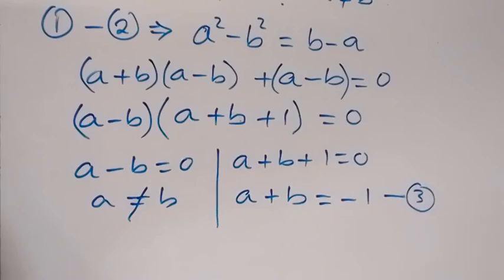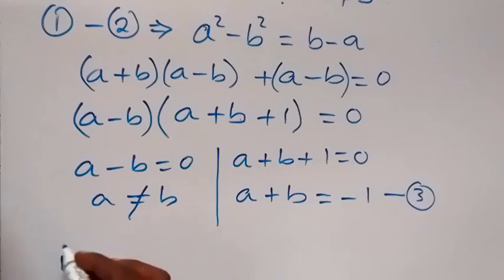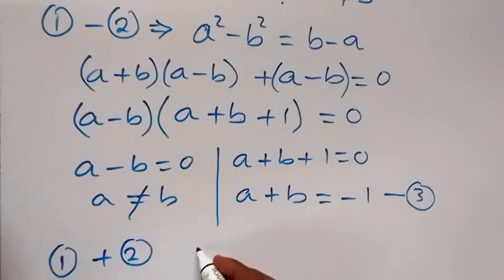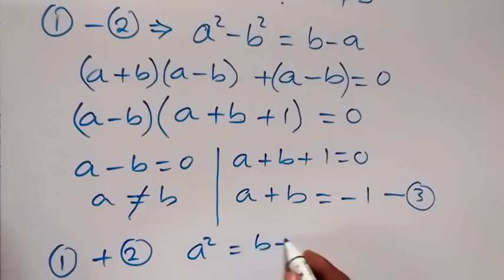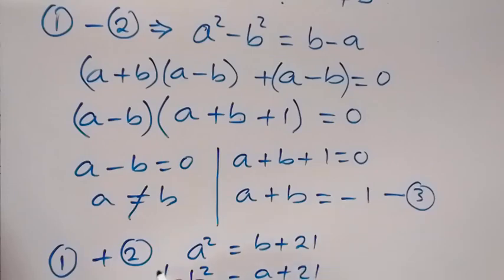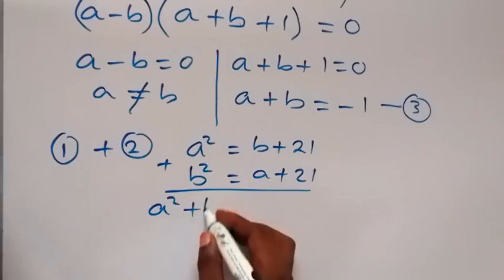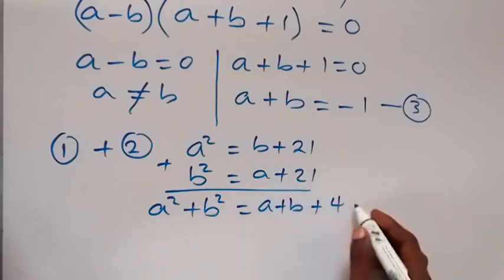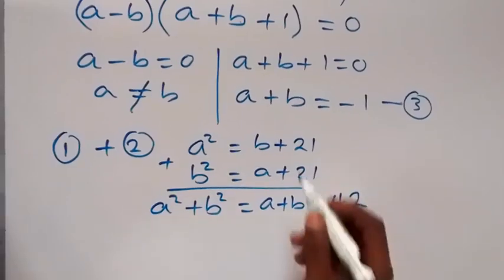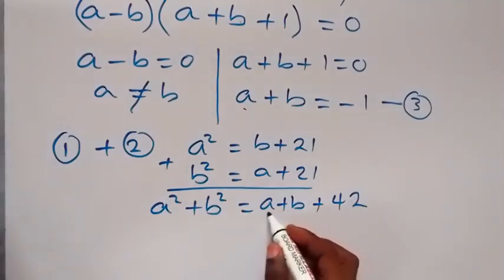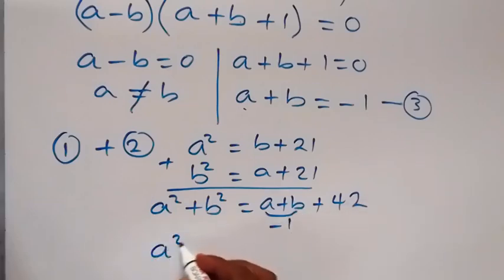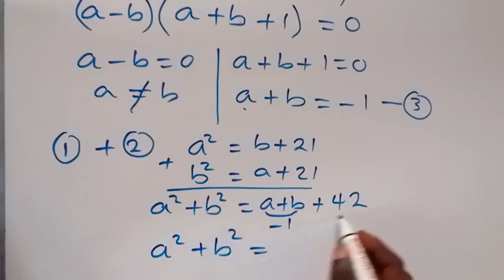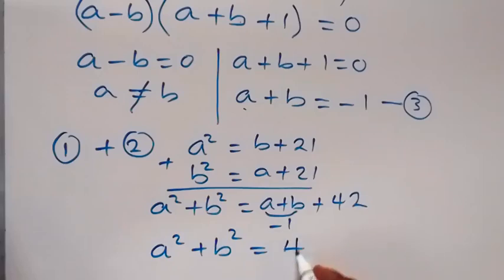Now let's add equation 1 and equation 2. From equation 1 we have a squared equals b plus 21, and from equation 2 we have b squared equals a plus 21. Summing these gives a squared plus b squared equals a plus b plus 42. Substituting equation 3, a plus b equals minus 1, so a squared plus b squared equals minus 1 plus 42.